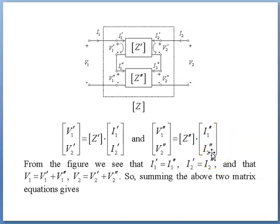From the figure, we can see that I1' equals I1'' because it comes from the same current I1. And I2' and I2'' would be the same because it comes from the same current I2. Your V1 is actually the addition of V1' plus V1'', and your V2 is the addition of V2' plus V2''.